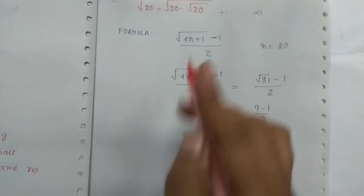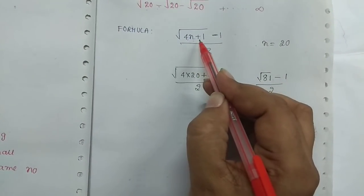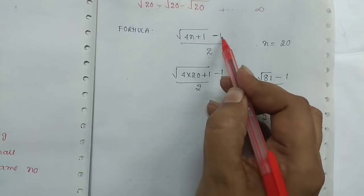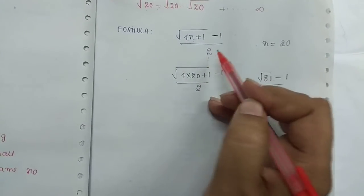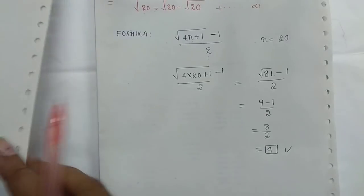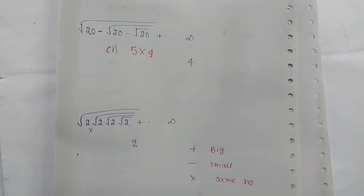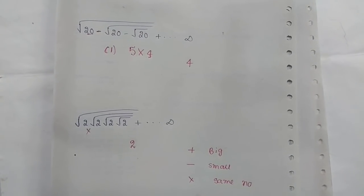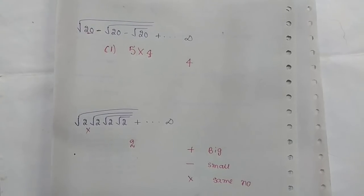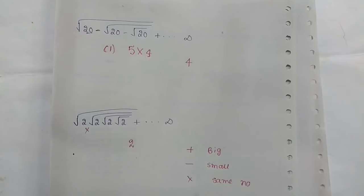You can write the formula: plus type uses plus 1 by 2, minus type uses minus 1 by 2. You can do this with the formula. So if you have a shortcut, you can solve your problems quickly. If you want to see more videos, subscribe to my channel. Don't forget to subscribe and share. Thank you.